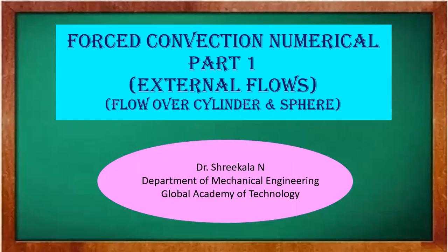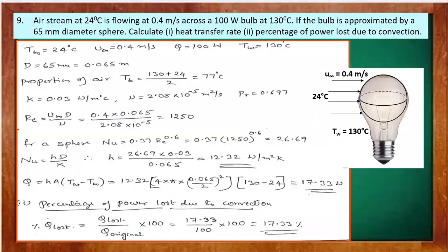Hello students. Today in this lecture let us solve some problems on forced convection, specifically flow over cylinders and spheres. The first problem says: an airstream at 24°C is flowing at 0.4 meters per second across a 100-watt bulb at 130°C.